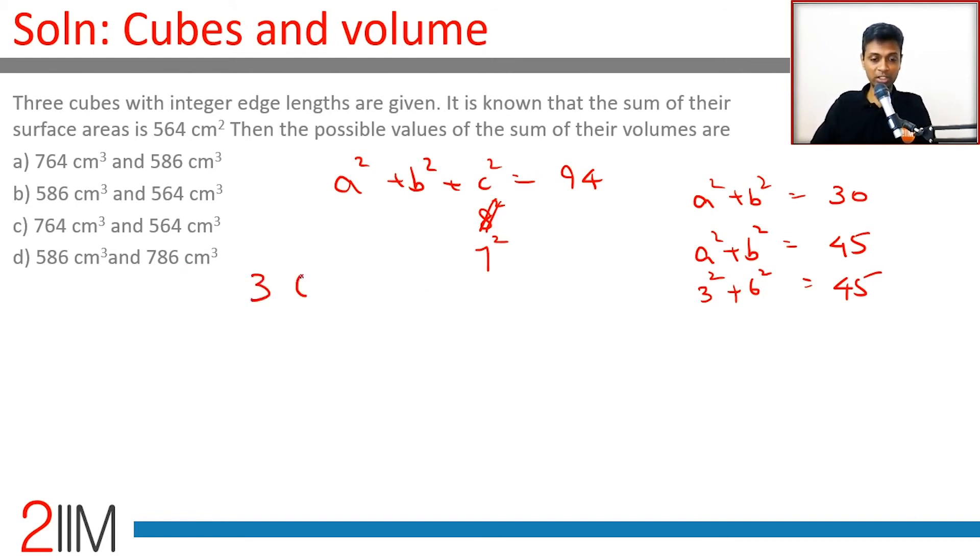So our numbers could be 3, 6, 7 or 2, 3, 9. Sum of the volumes: 3 cube is 27, 6 cube is 216 plus 343, or 8 plus 27 plus 729.